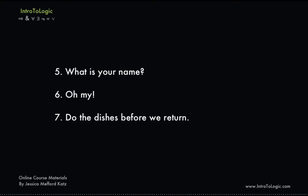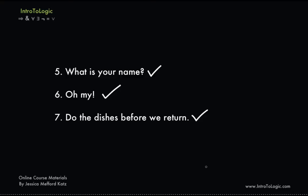Now consider the following examples. Number five: what is your name? Number six: oh, my. And number seven: do the dishes before we return. So let's ask ourselves, is number five an assertion? Is there a truth of the matter? Can number five be true or false? The answer is no. If I ask you a question, I'm not actually making an assertion. I'm just simply waiting for some sort of response. The question 'what is your name' is neither true nor false — it just wouldn't make sense. So no assertion there.